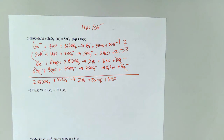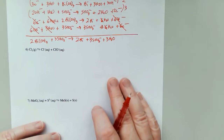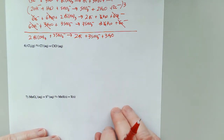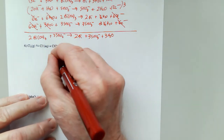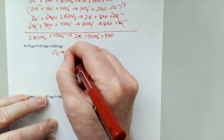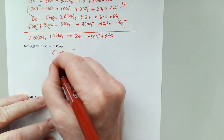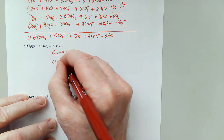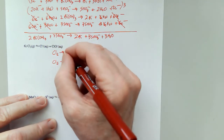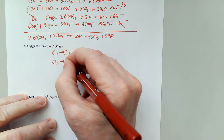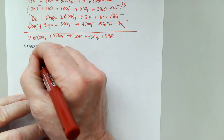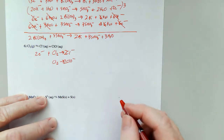You'll note that the charge is the same on both sides of the equation. Number six is one of those disproportionation reactions — that's where one species is both oxidized and reduced. So two and two to balance the chlorines. I can just throw in the two electrons right now.